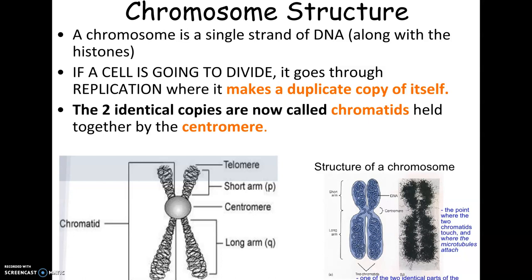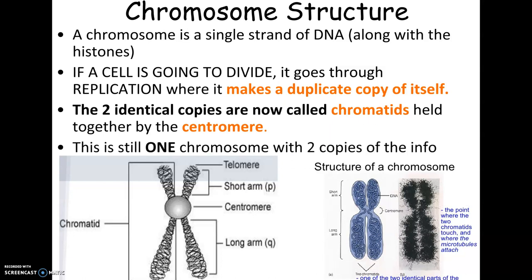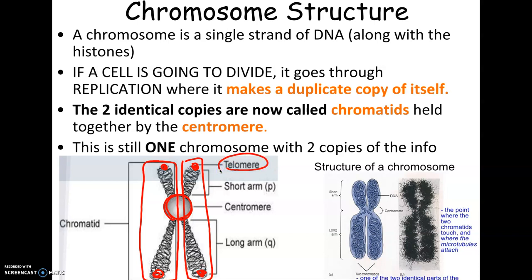These two sides are called sister chromatids, and the centromere is what holds the two sides together — this is still one chromosome. The tips are called telomeres at the top and bottom. Telomeres are sort of protective parts, like the aglets on your shoelaces that prevent them from unraveling — they're little caps on the chromosome tips. They actually shorten as you age, and we'll talk about why they shorten and how shorter telomeres might indicate a shorter lifespan.